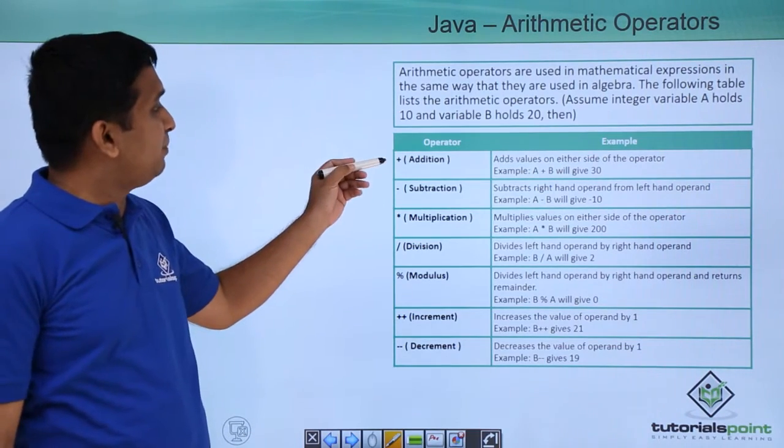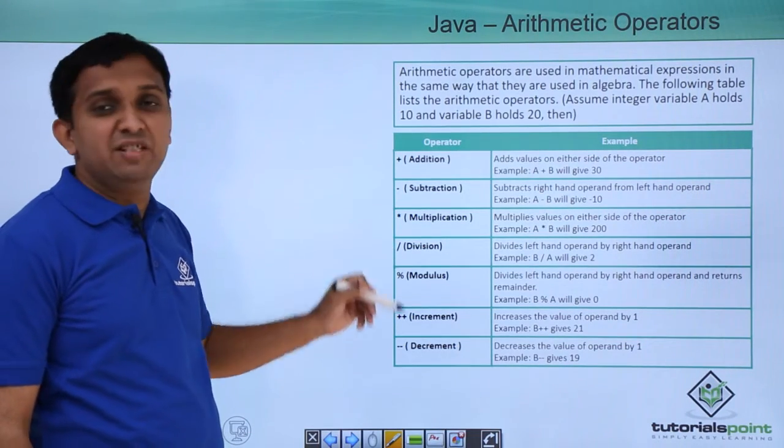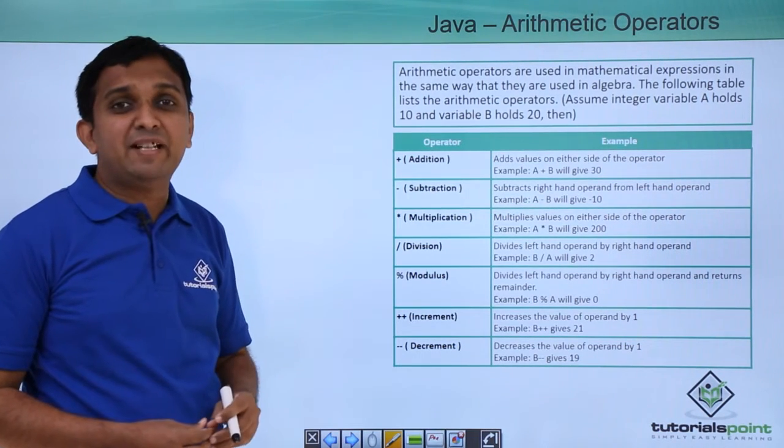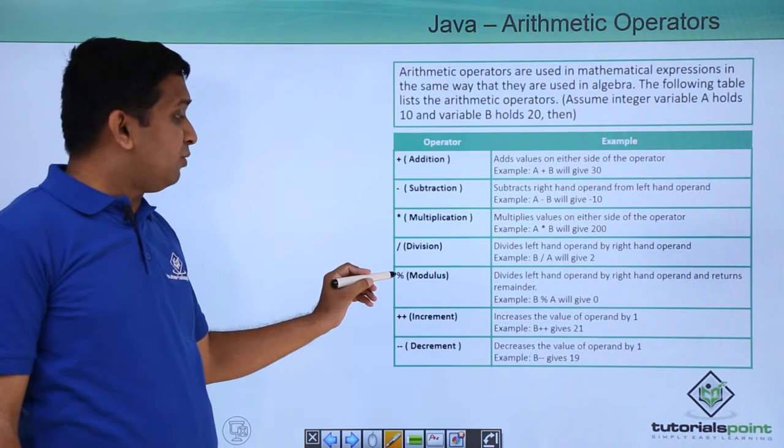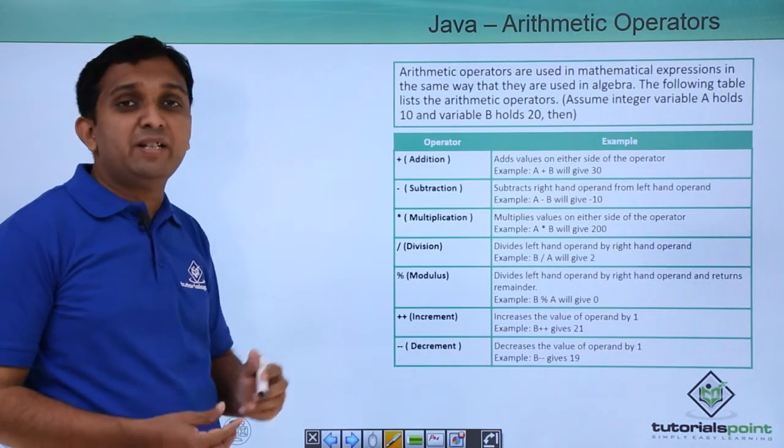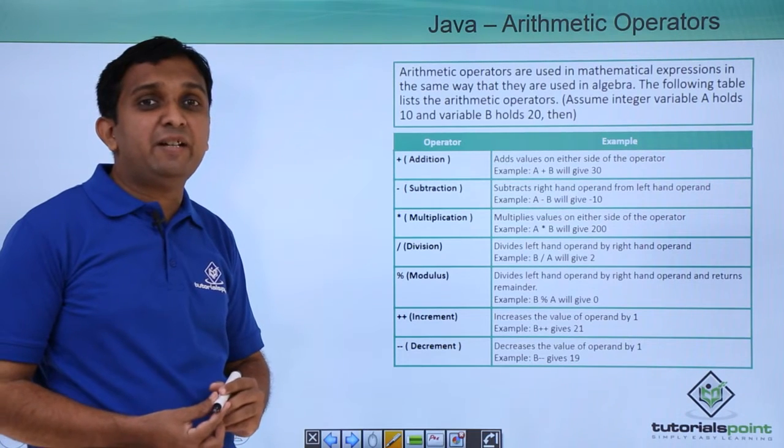For the first four operators—plus, minus, multiplication, and division—the meaning is the same as our mathematical meaning. Now we will see this mod operator in detail. The mod operator will give you the remainder of the division.